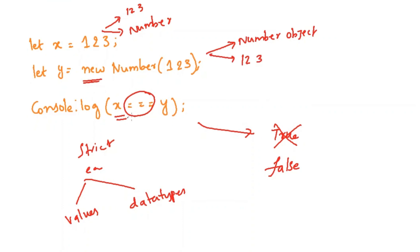Now if you compare this x and y values, even though the values - that is 123 - both are similar, the data types are different. Here the data type is number whereas here the data type is object.